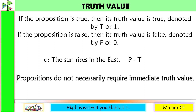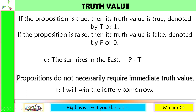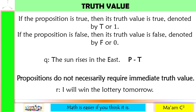Propositions do not necessarily require an immediate truth value. For example: 'I will win the lottery tomorrow.' This statement is a declarative sentence. Although its truth value can only be determined tomorrow after the lottery, we know that it can either be true or false, but not both. So this is still a proposition.